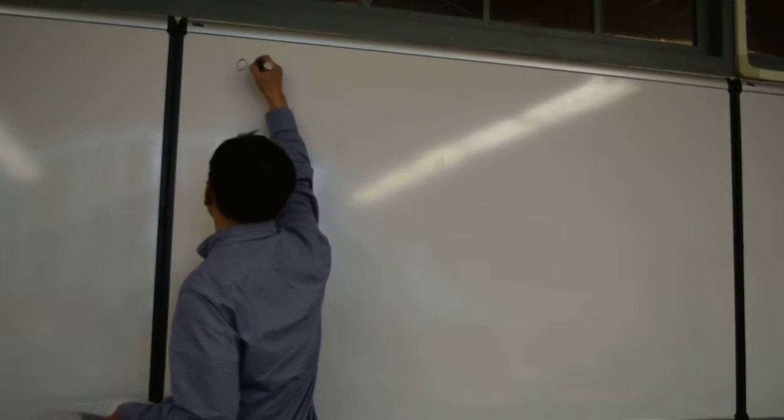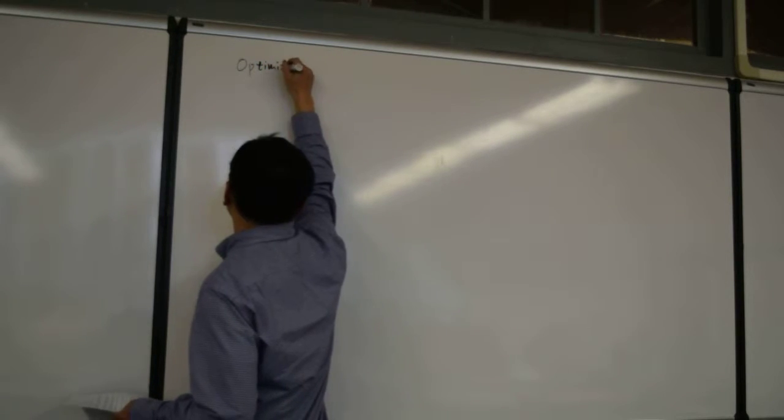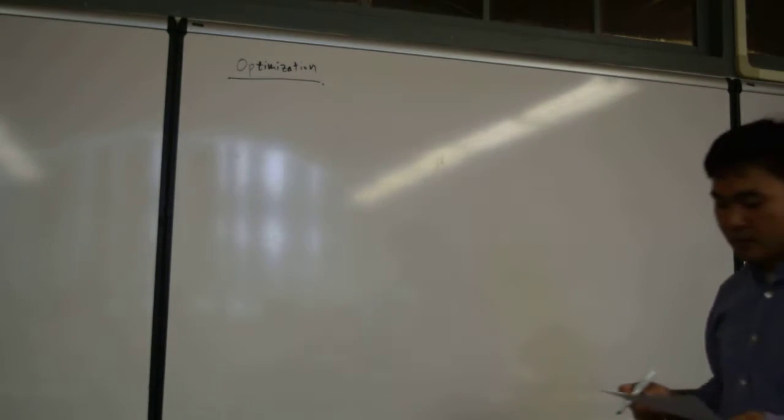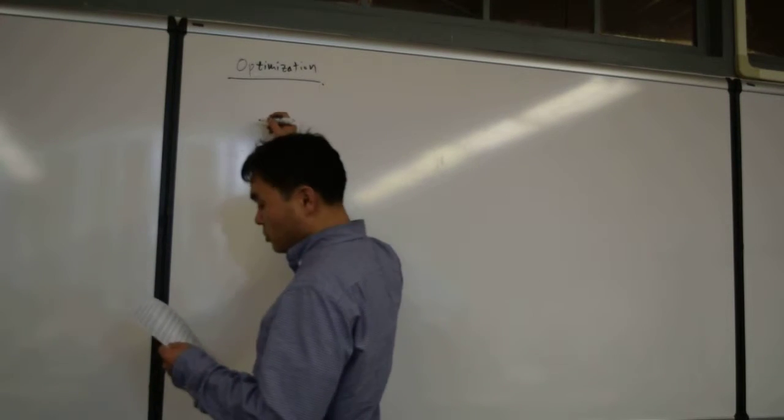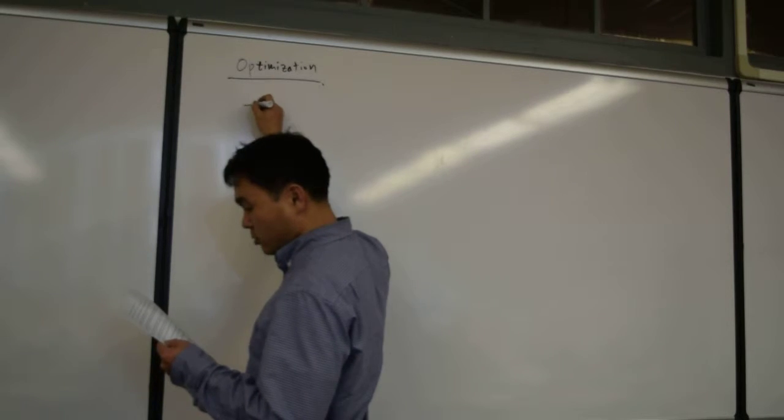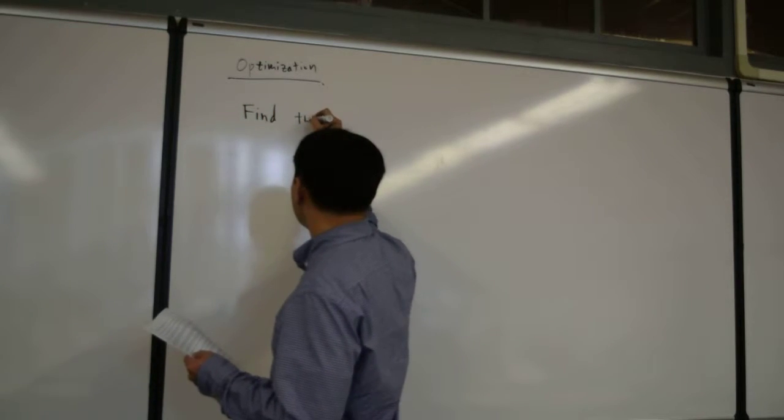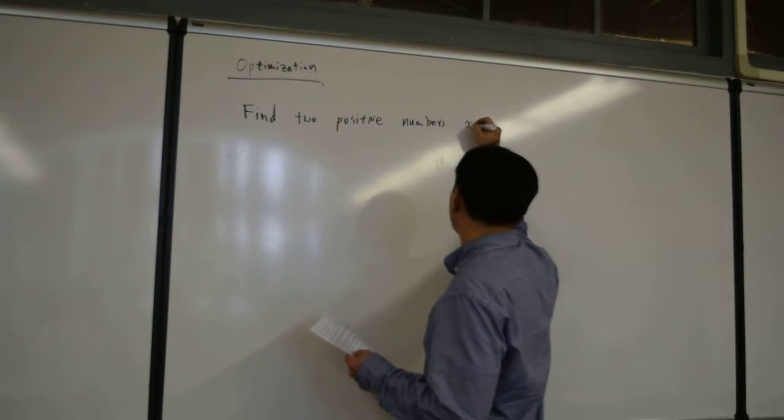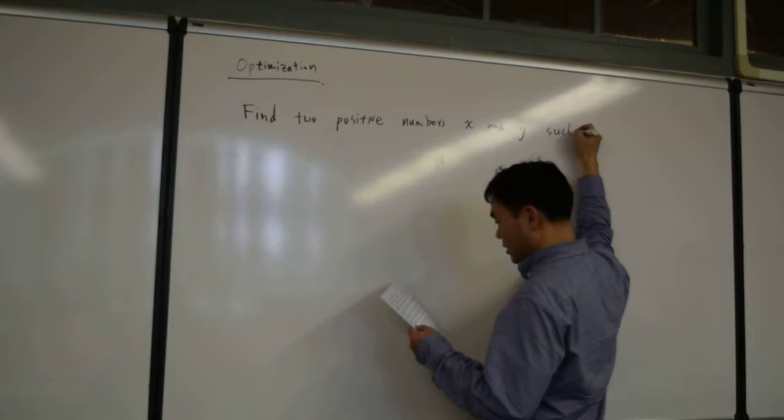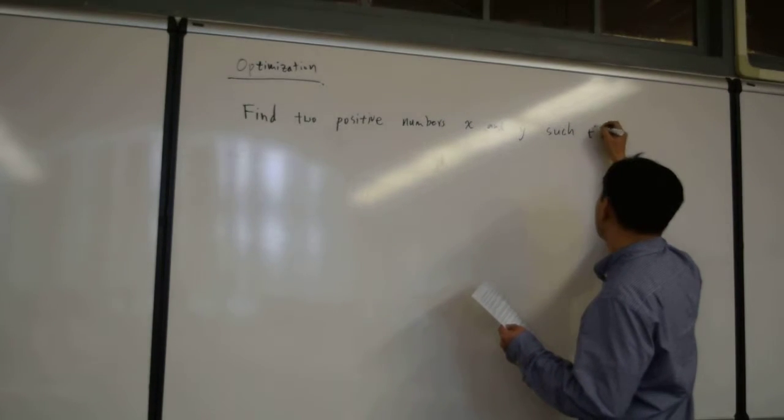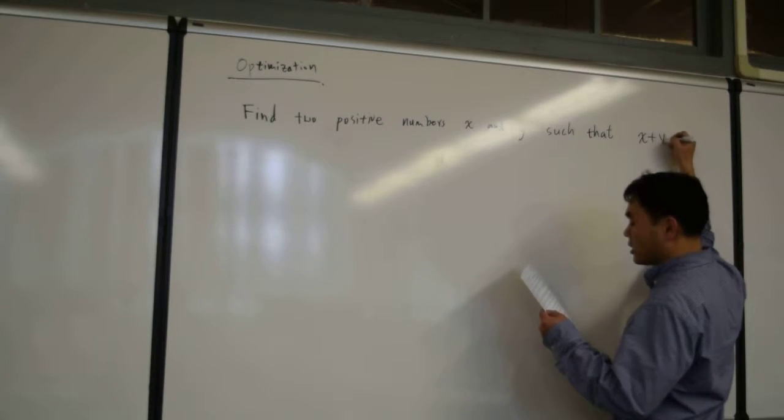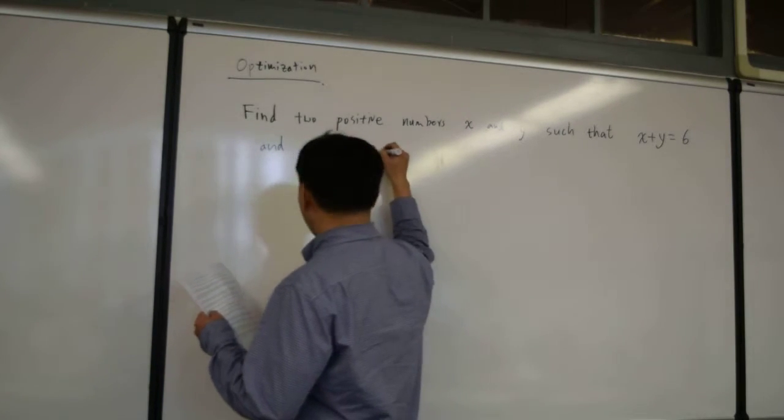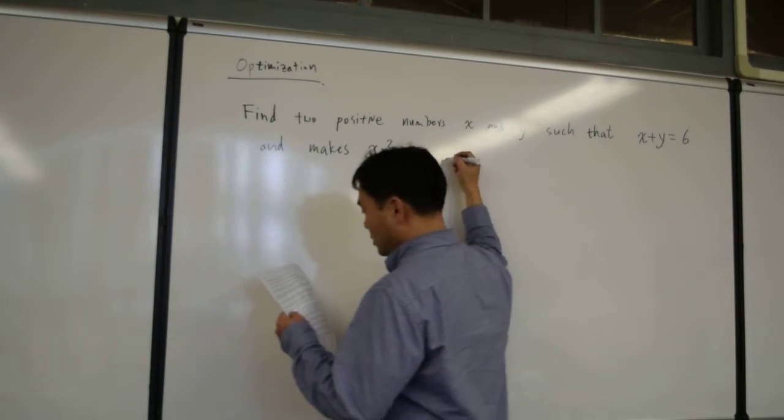Optimization. Let me try question number two here. Find two positive numbers, x and y, such that x plus y is 6, and makes xy squared as large as possible.